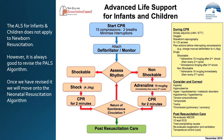Drugs — shockable: adrenaline 10 micrograms per kilo after second shock, then every second cycle; amiodarone 5 milligrams per kilo after third shock, if authorised. Non-shockable: adrenaline 10 micrograms per kilo immediately, then every second cycle.